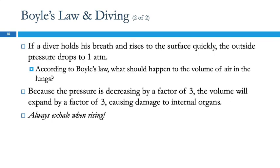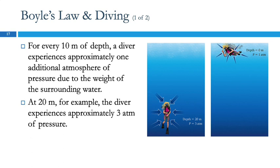A student asks: are you always at 1 ATM? At sea level, yes, you're at 1 ATM. It changes a little with the weather, since there are variations in pressure, but those are pretty small. If you live at a higher elevation the pressure will be lower — like Denver, which is a mile above sea level, where the pressure is significantly lower. Go too high and you can't breathe anymore.